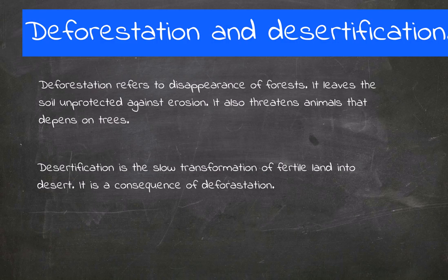The second negative effect is deforestation and desertification. Deforestation refers to the disappearance of forests. It leaves the soil exposed and unprotected against erosion. It also threatens animals that depend on trees.